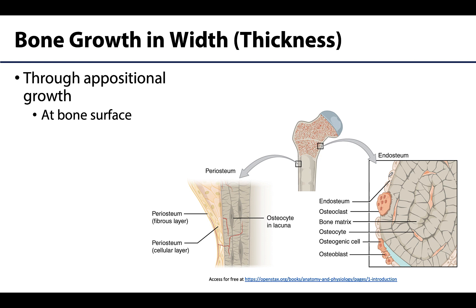Bone growth in thickness or diameter can only occur through appositional growth and can occur throughout life. This type of growth occurs at the bone surface, just deep to the periosteum. Osteoblasts begin to secrete the organic materials of the bony extracellular matrix, which initiates calcification. Those osteoblasts will eventually sufficiently surround and trap themselves, and once trapped, become osteocytes. Depending on how much bone growth occurs, this process can form numerous or only a few osteons. Additionally, osteoblasts deposit new circumferential lamellae — those lamellae that surround the entirety of the outer bone.